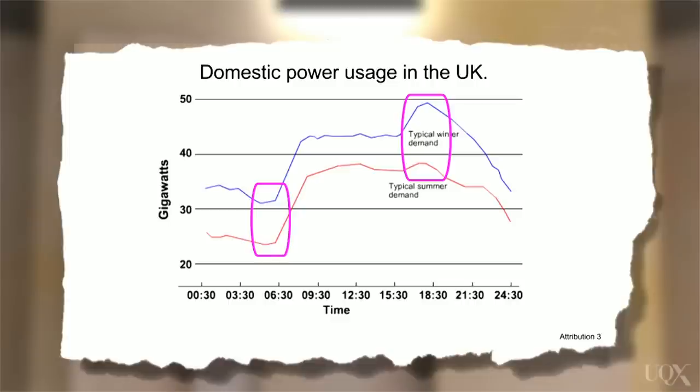Now you might be tempted to speculate about the reasons why this change has occurred — for example, that people use heaters in winter which use more power — but do not do this. In Task 1 of the IELTS academic writing test, you are simply required to describe the data presented in the visual. The task does not require you to give your opinions or to speculate about the data.